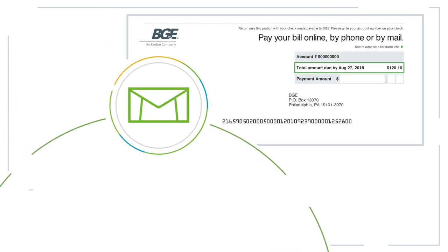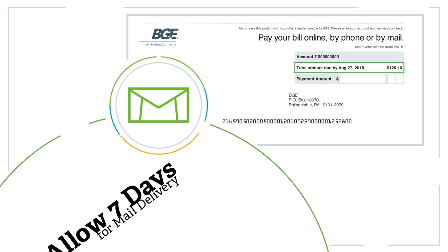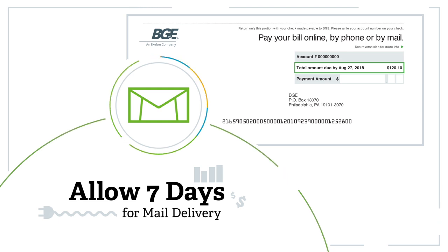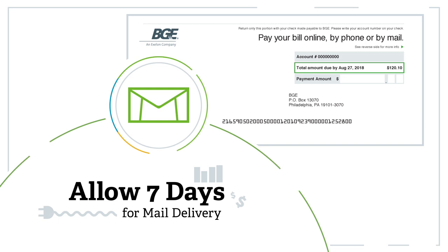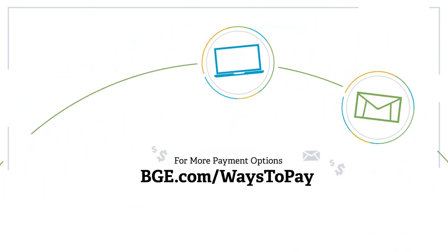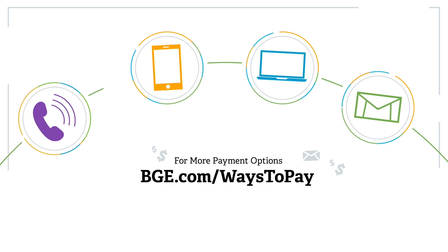Included with your bill is a tear-off, which you can use to pay your bill by mail. If paying by mail, make sure to pay at least seven days in advance of your due date to allow for timely processing of your payment. We also provide many other convenient ways to pay, including through our website, mobile app, or by phone.